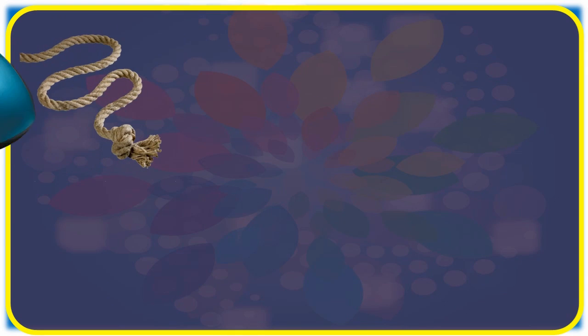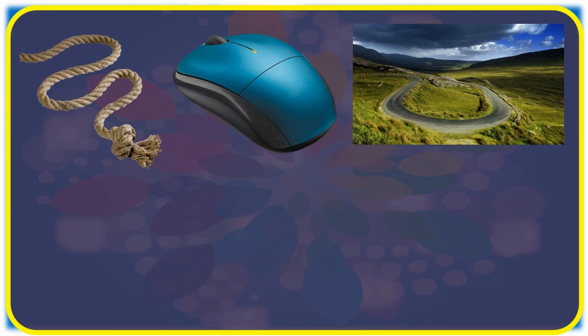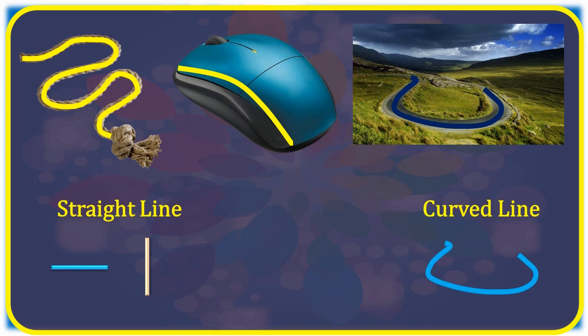While this rope, this mouse and this road are not straight in shape. Or we can say, these are curved in shape. So here, we observed that straight line looks like this while the curved line looks like this.